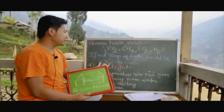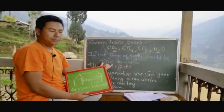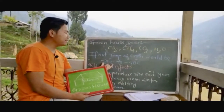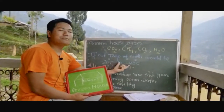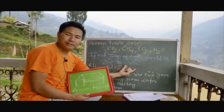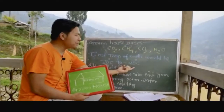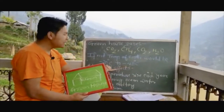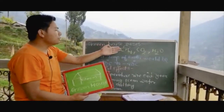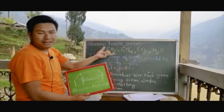Without greenhouse gases, the Earth's temperature would be around minus 20°C to minus 40°C, which is impossible for life. So greenhouse gases are essential, but there are some harmful effects too.